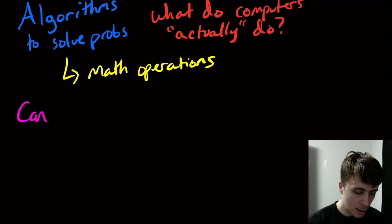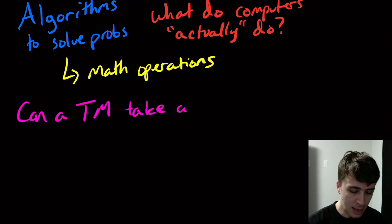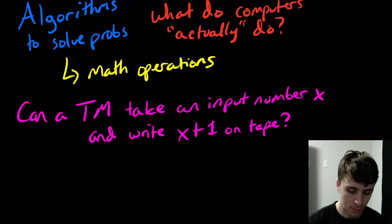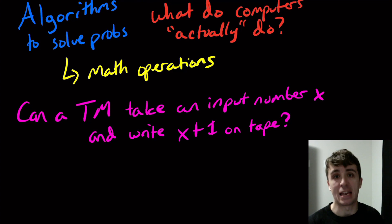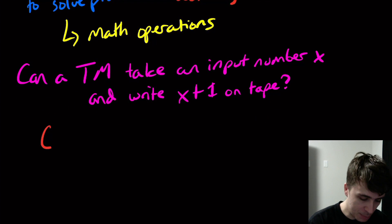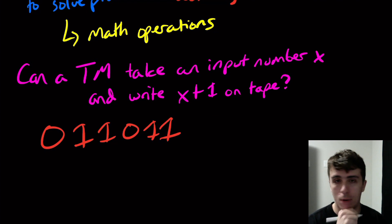What I want to convince you is that we can do all of these operations pretty easily. Can a Turing machine take an input number x and write x+1 on the tape? The simplest possible operation is adding one to a number. Let's look at an example. Say we have 011011, this is just some number.